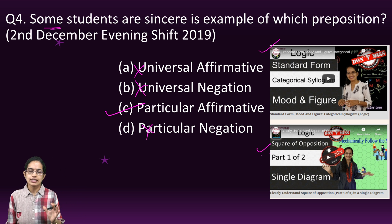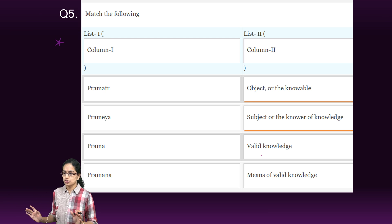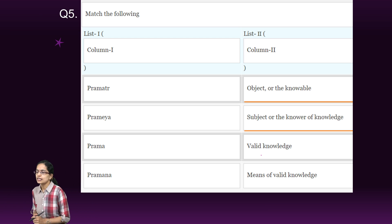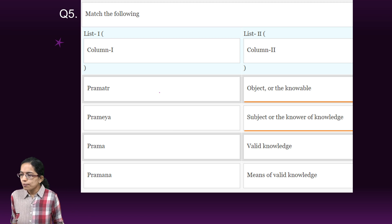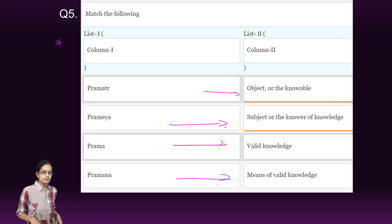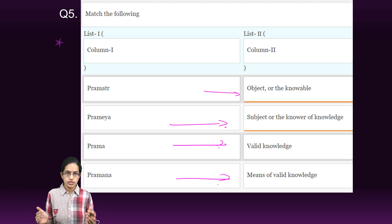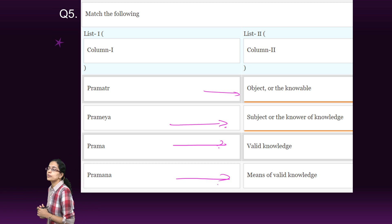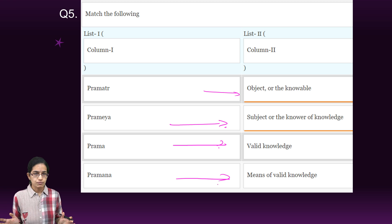Just go back and understand these lectures in detail because logic is a very essential topic. Here is a direct question where you have to match list one and list two. Pramatra means the object, Pramai means the subject, Prama is the knowledge, and Pramad is the means of attaining valid knowledge. This was directly asked from the Indian logic section — a very basic and fundamental question.